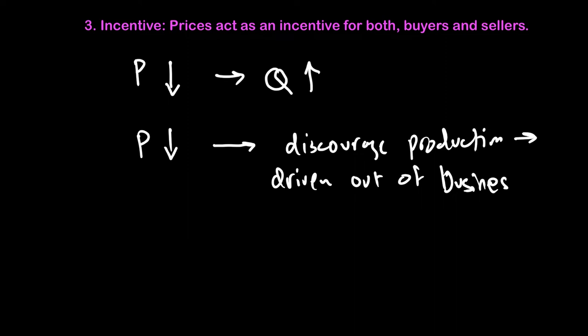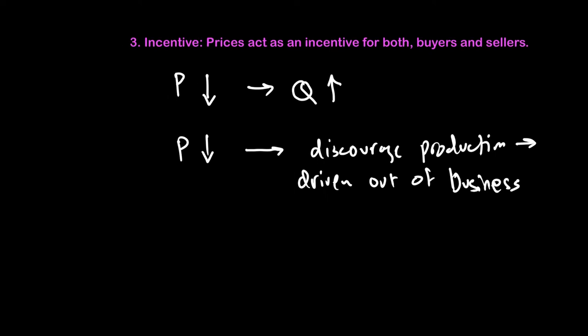It all depends on whose perspective we're looking at. From a buyer's perspective, there is more incentive to buy if the price of a good is going down — if cost of production goes down and therefore price goes down, we will buy more. From a producer's perspective, when demand is going up and price goes up, the producer has an incentive to produce more. But if cost goes up and price rises, the consumer may react by buying less. The price plays a role for both buyers and sellers to get the maximum possible return whenever price changes.